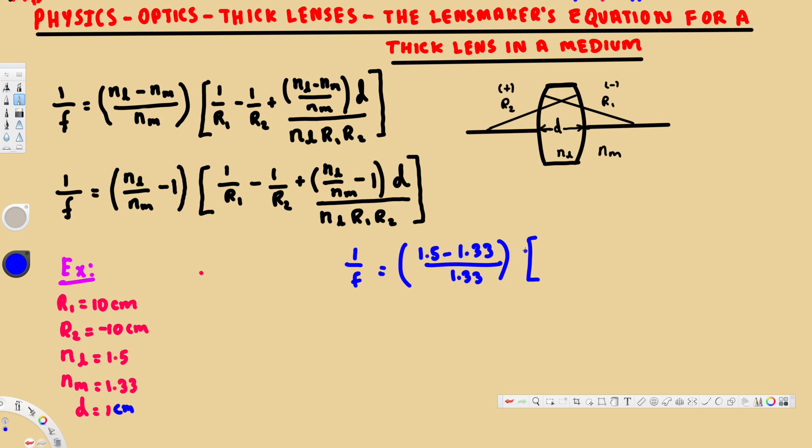Now let's plug in the values. First, we have 1 over 10 minus 1 over minus 10. On the other side, we have plus NL over NM. NL is the lens index of refraction, 1.5, and the medium's index of refraction is 1.33, minus 1, times 1 divided by NL (1.5) times the radius of refraction of both multiplied, which is 10 times 10.